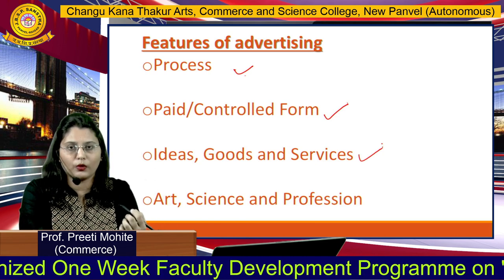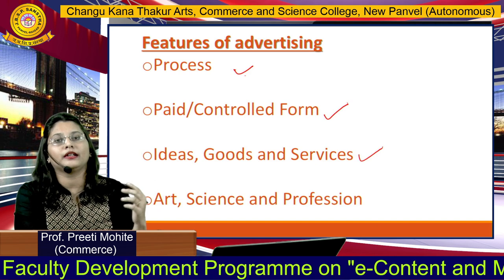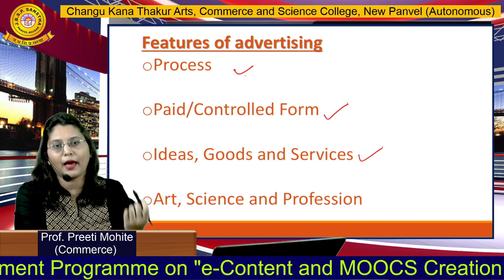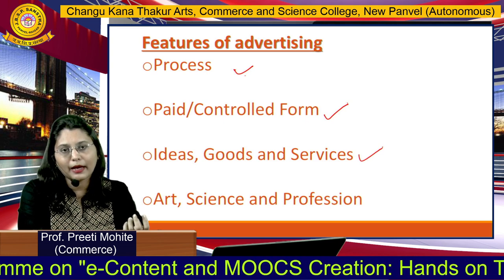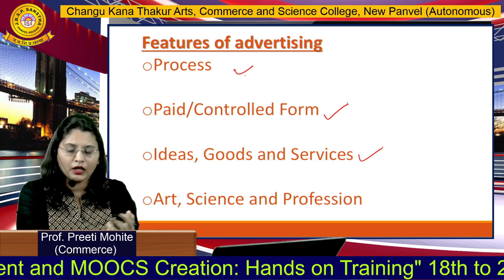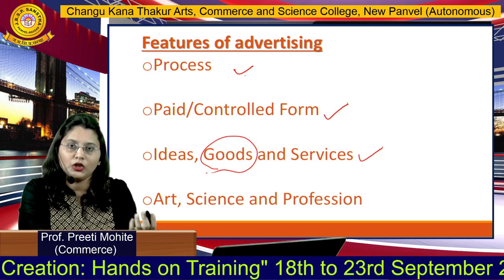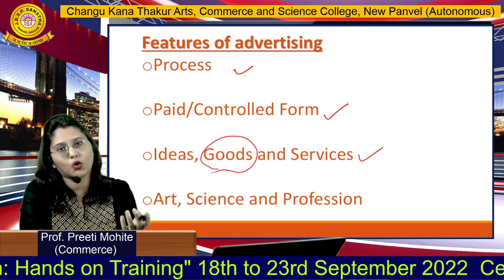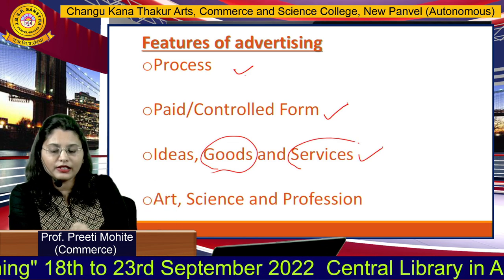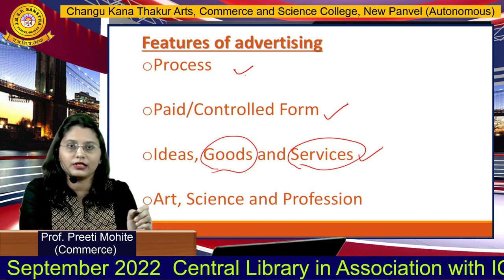Next is ideas, goods and services. Ideas means creating awareness campaigns, like environment protection campaigns or family welfare campaigns. Goods refers to FMCG goods like toothpaste, soap, shampoo and so on. Services includes banking services, insurance services, and so on.